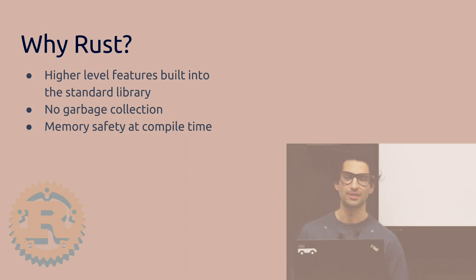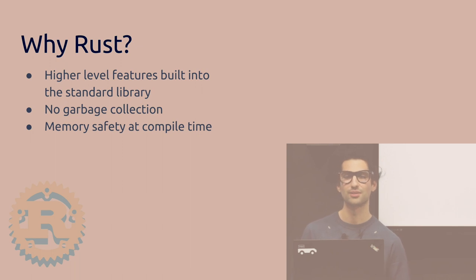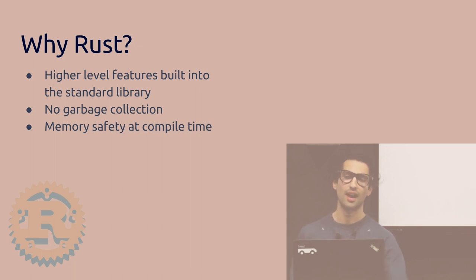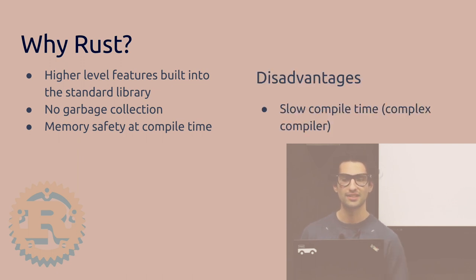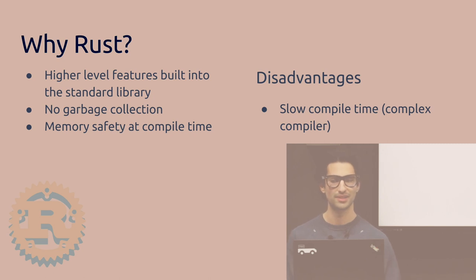Why use Rust as opposed to another language? It has higher-level features built in like modern languages, it doesn't have garbage collection so you manage your own memory, and it's memory safe at compile time. Disadvantages: it has slow compile times because it's doing a lot of things during the compile step.